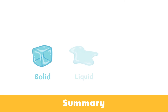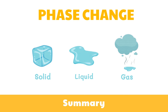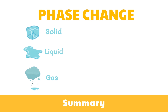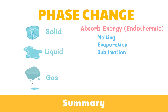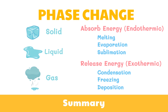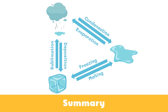Now let's wrap things up. Matter exists in three phases: solid, liquid, and gas. Matter undergoes changes in physical state known as phase changes. The phase changes that absorb energy, or endothermic, are melting, evaporation, and sublimation. While the phase changes that release energy, or exothermic, are condensation, freezing, and deposition. There are six ways to change the phase of matter: melting changes a solid to liquid; freezing changes a liquid to solid; evaporation turns liquid to gas; condensation transforms gas to liquid; sublimation changes a solid to gas; and deposition changes a gas to solid.